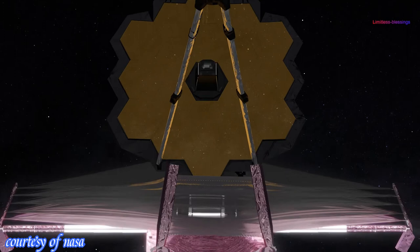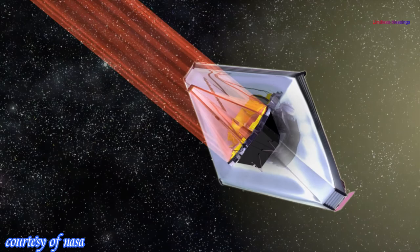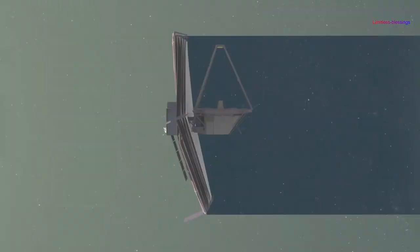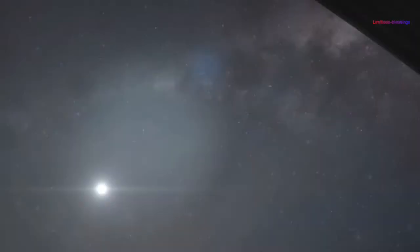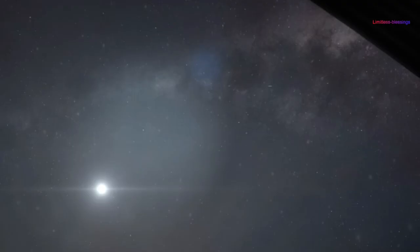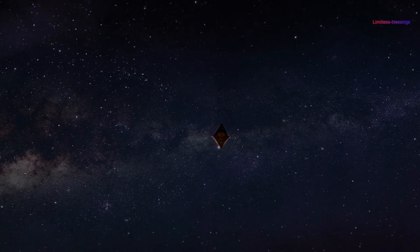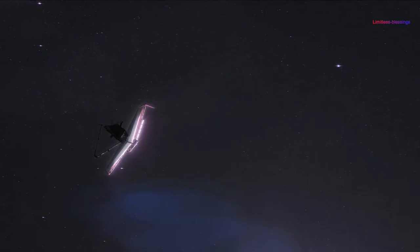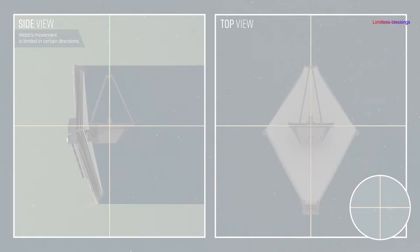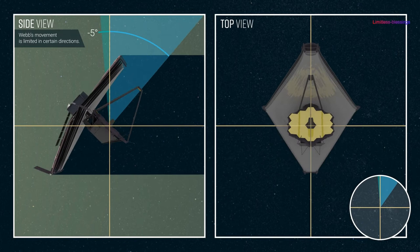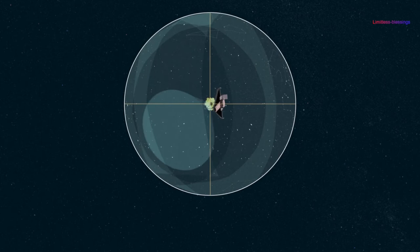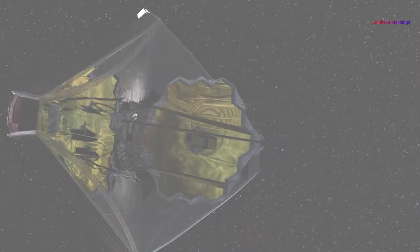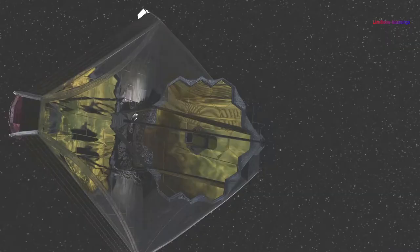Reports say that the James Webb Space Telescope is now in L2 orbit, its final destination about 1.5 million kilometers from Earth. Webb is currently at its observing spot, a Lagrange point 2, that is L2, nearly 1 million miles, 1.6 million kilometers. This telescope is the largest and most powerful space telescope ever launched.